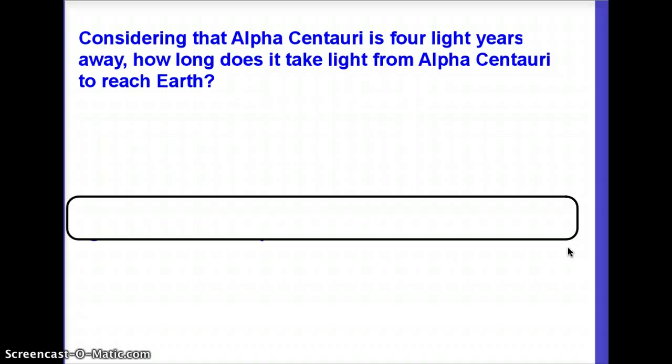Well, how long does it take light from Alpha Centauri to reach the Earth? Maybe pause for a second and think about that. Now, it's four light years away. Light can travel a distance of one light year in one year. That's what it means to be a light year. So if I've got to go four times farther than that, four light years, it'll take me four times longer to get there. So it would take four years for light from Alpha Centauri to reach the Earth. Not too bad. That's pretty easy to understand. The number of light years is always going to tell you the number of years it would take light from that object to reach the Earth.